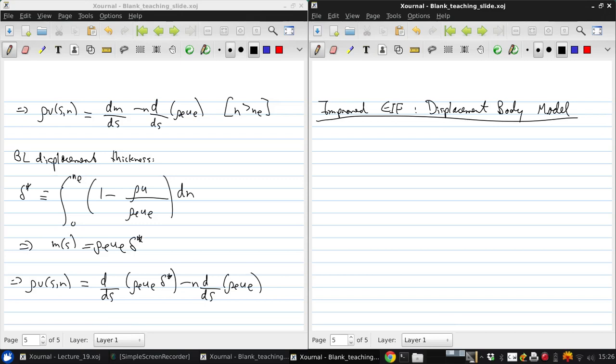Now the aim of any of these improved EIF models is to satisfy the normal mass flux requirement, so ρV of s and n should equal ρ_i V_i of s and n. This again is going to improve the flow field prediction, especially if the boundary layers are thick.